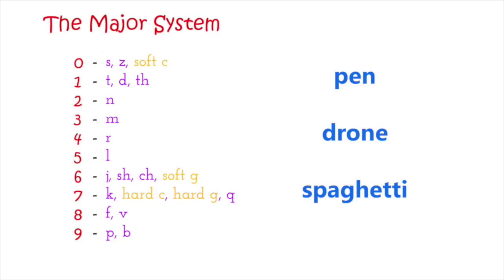For 'spaghetti,' it's important to remember that only sounds matter. The double T is still just one T sound, so spaghetti gives S=0, P=9, G=7, T=1 — that's 0971. If a letter is doubled but makes only one sound, you count it as one digit.